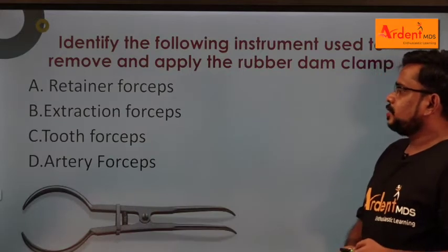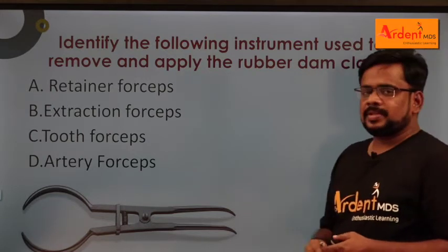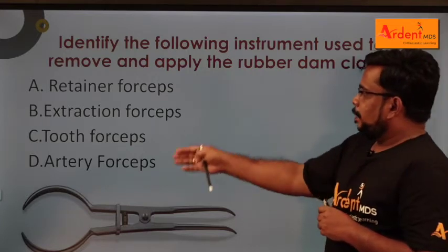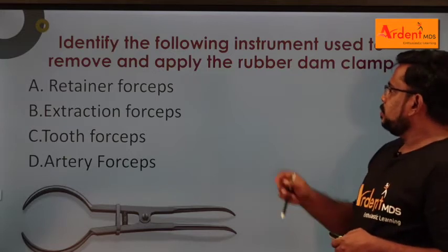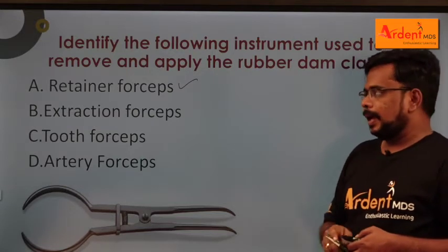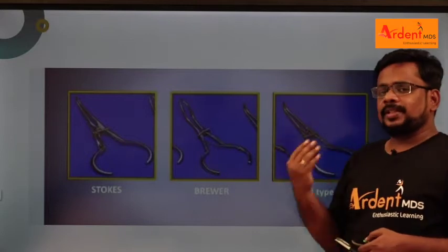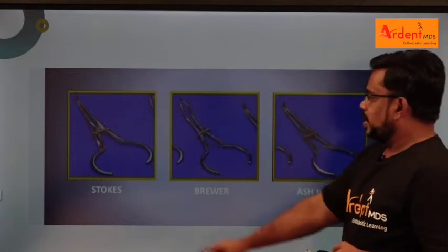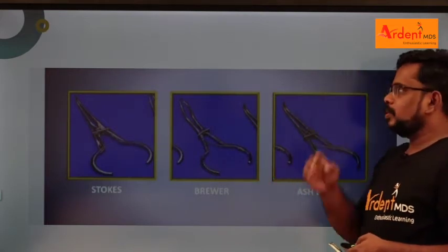One important thing to note in the exam: some topics have two or three questions asked from them. In rubber dam, apart from the frame, they also asked about forceps. The forceps is called retainer forceps, used to remove and apply the rubber dam clamp. The different types of retainer forceps are: Stokes, Brewer, and Ash type. These are the types of rubber dam forceps - they may ask which is not a type of rubber dam forceps.